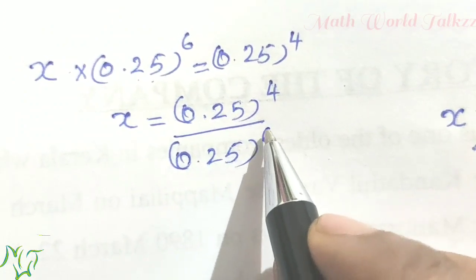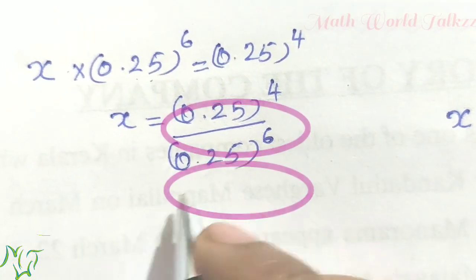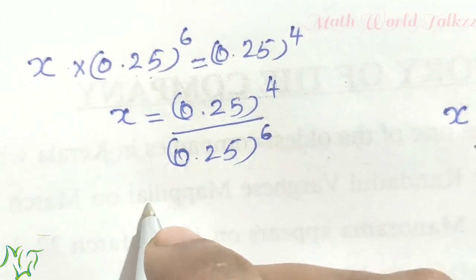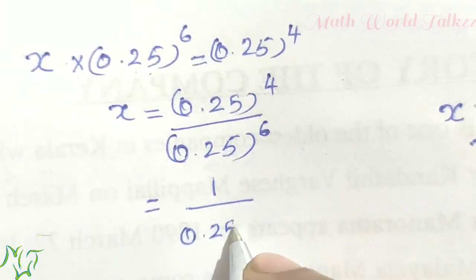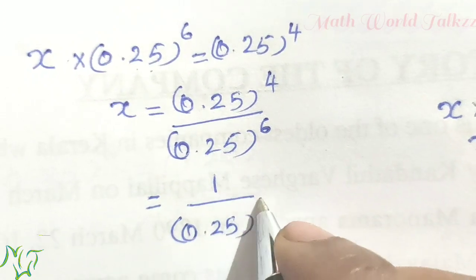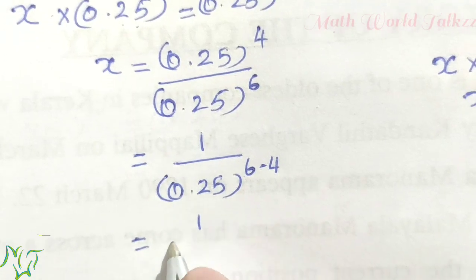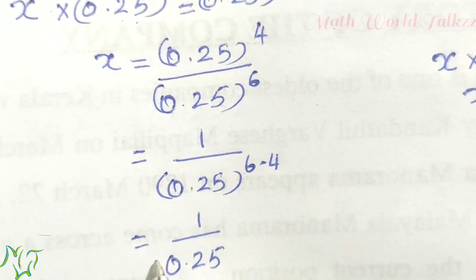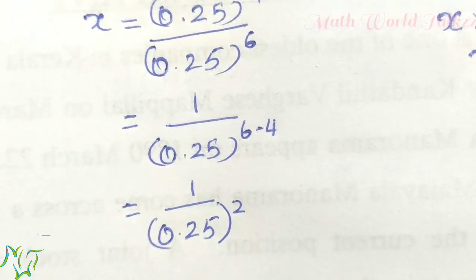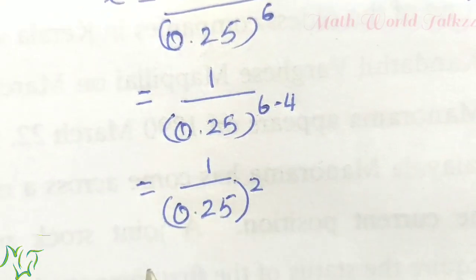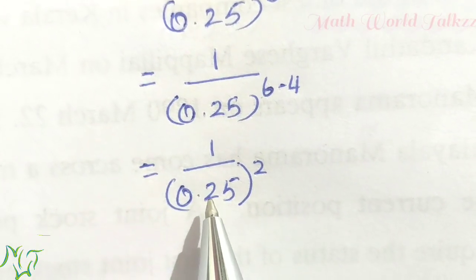Using the second division rule: 1 by 0.25 whole raised to 6 minus 4, which equals 1 by 0.25 whole squared. Now we find what 0.25 is as a fraction.